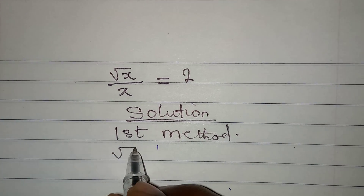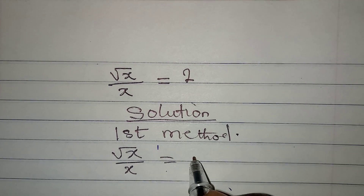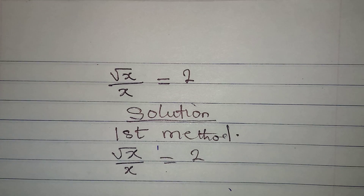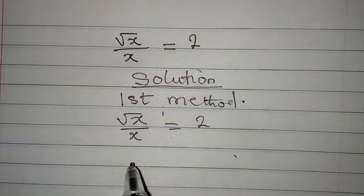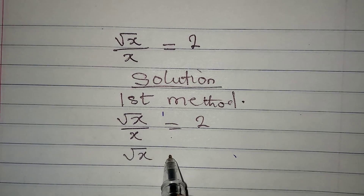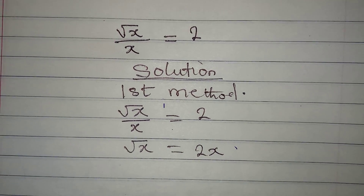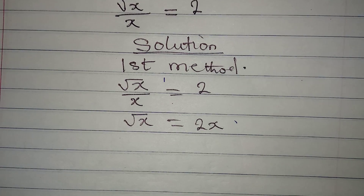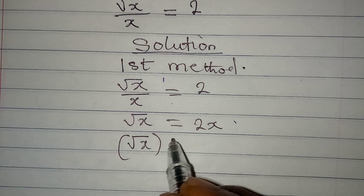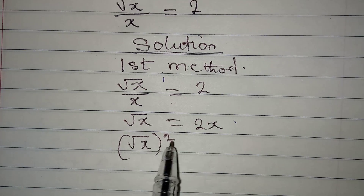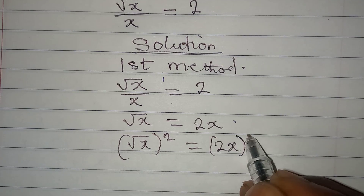The first method: we have square root of x over x equal to 2. The first step for this method is to cross multiply, so that square root of x will be equal to 2x. And then from here, the next step is...